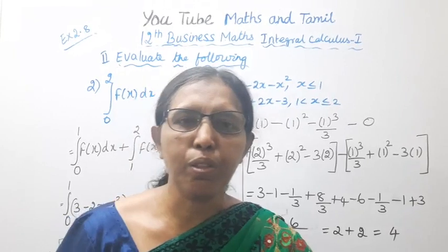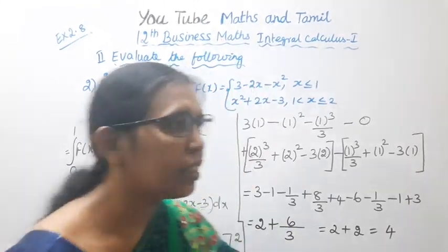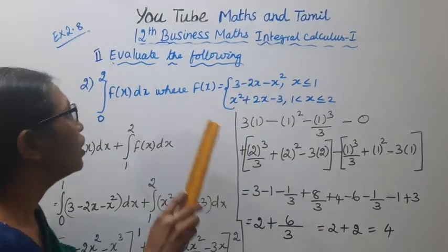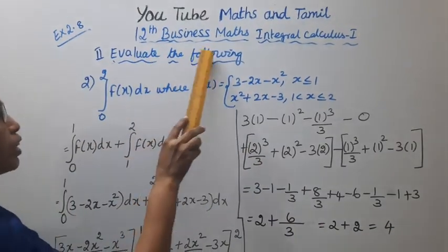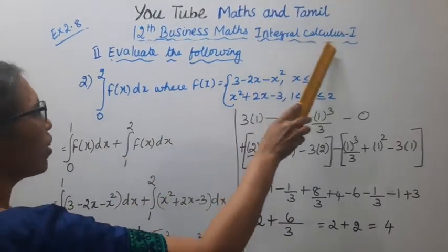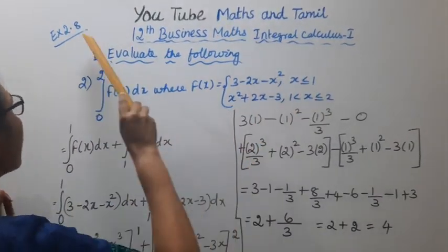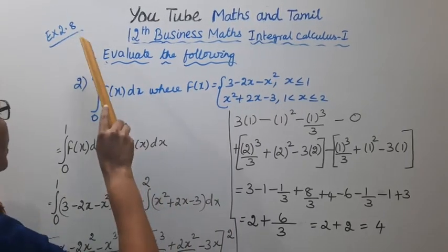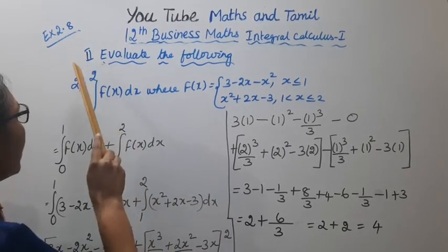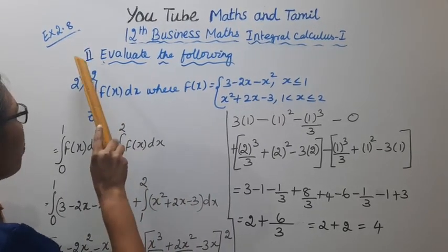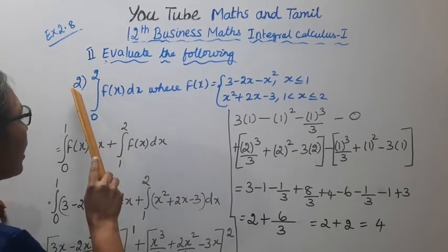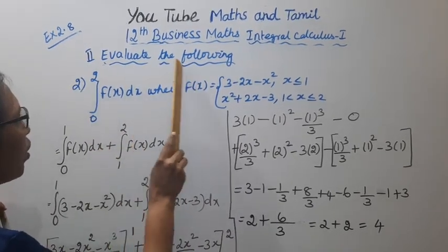Hello students, welcome to Max and Tramble channel. 12th standard business math, integral calculus 1, exercise 2.8, second part, Roman numeral 2 — evaluate the following.